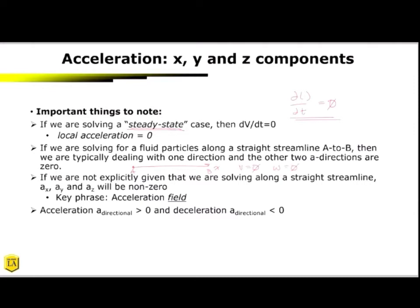If you are not explicitly given that you're solving along a straight line, ax, ay, and az will be non-zero. So the key phrase to look out for is solving for the acceleration fields. So if you're solving for a field and you notice that you have u, a v, and a w component, that means you're doing ax, ay, and az calculations.